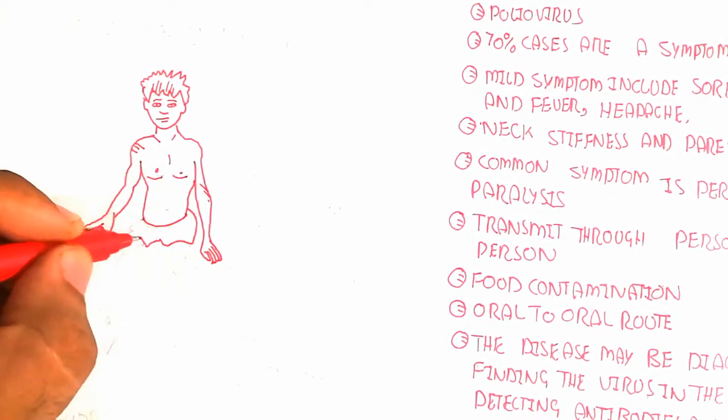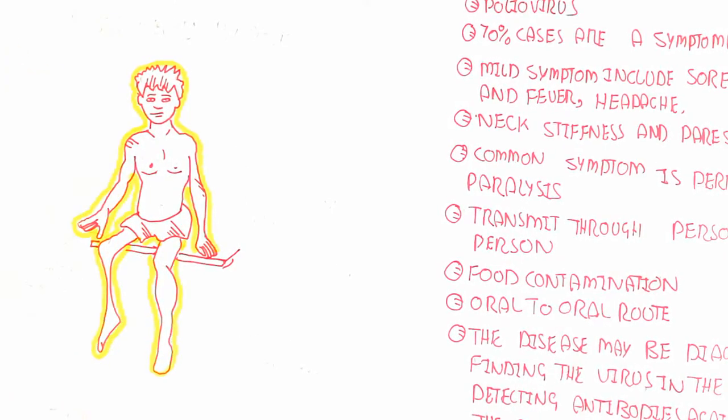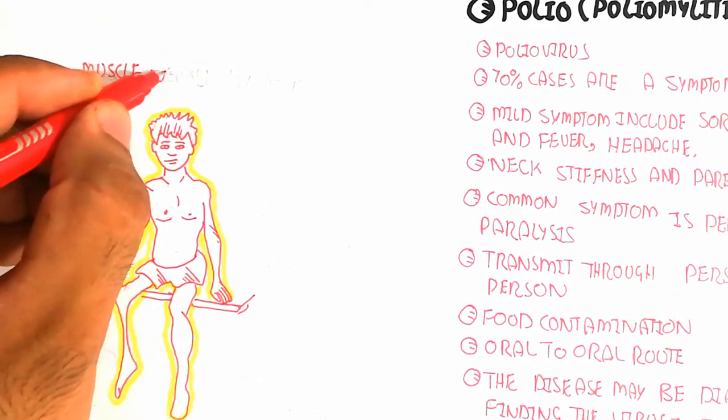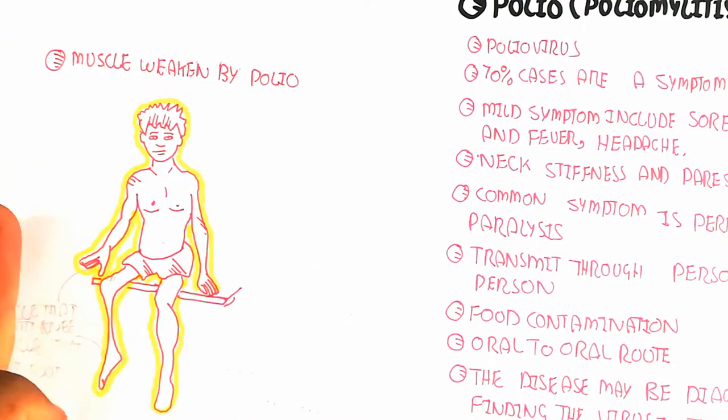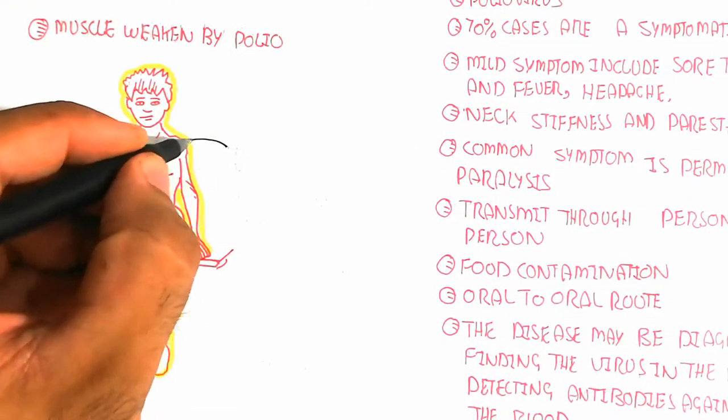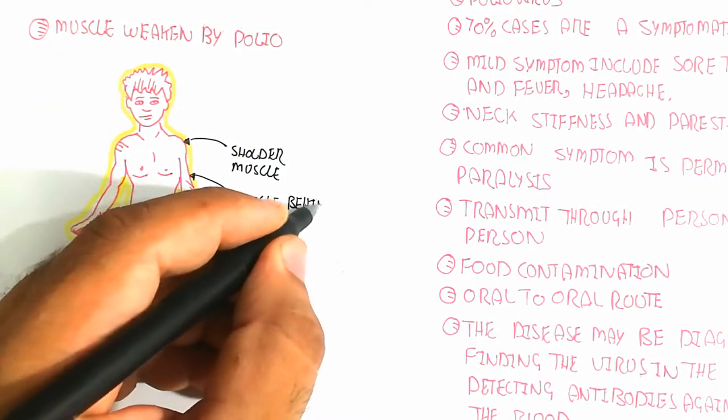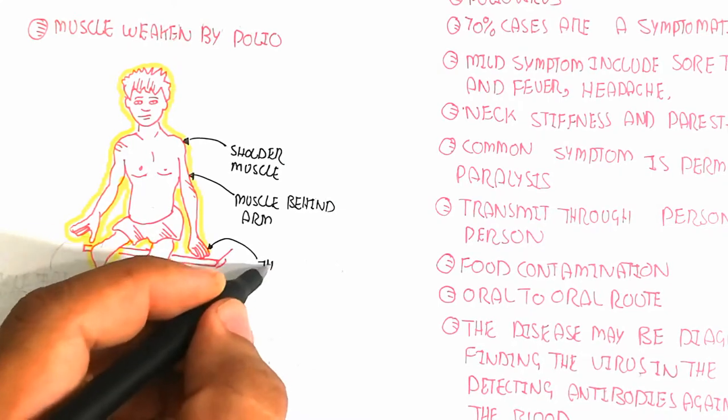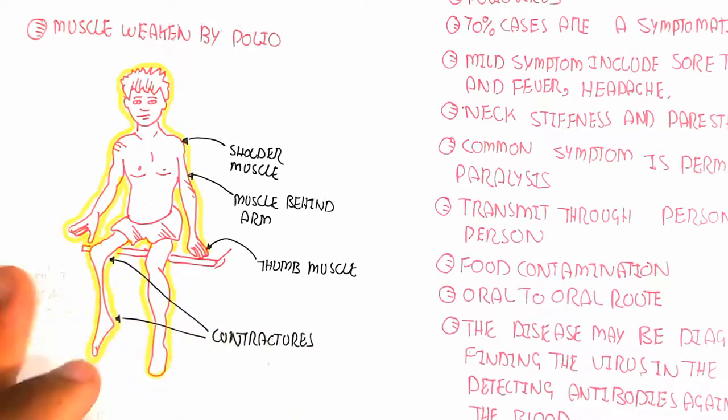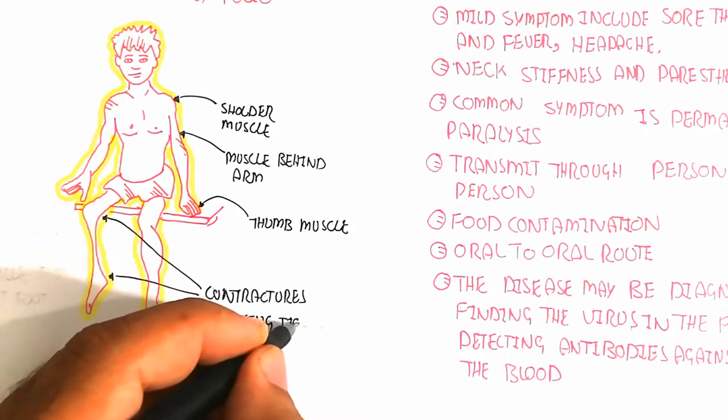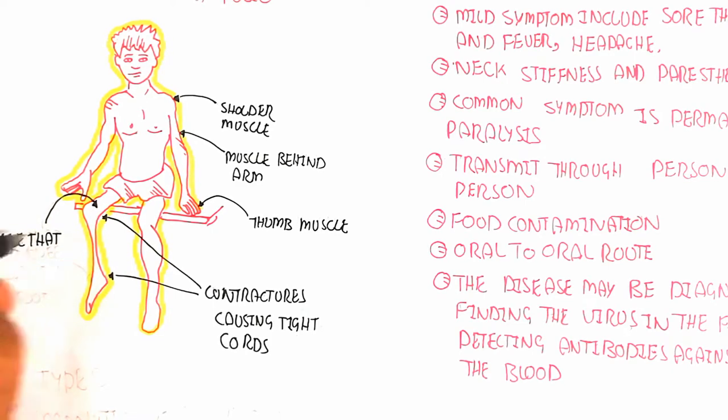Here you can see muscles weakened by polio. This diagram shows the shoulder muscle, muscle behind the arm, the thumb muscle, and contractures causing tight cords. On the other hand, the muscles that start the knee and lift the foot. So you can understand the different complications that can arise due to infection by the polio virus.